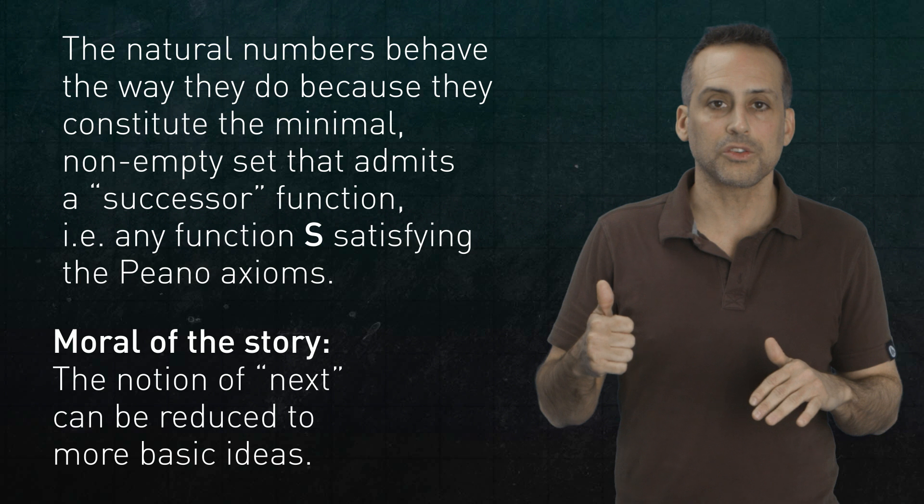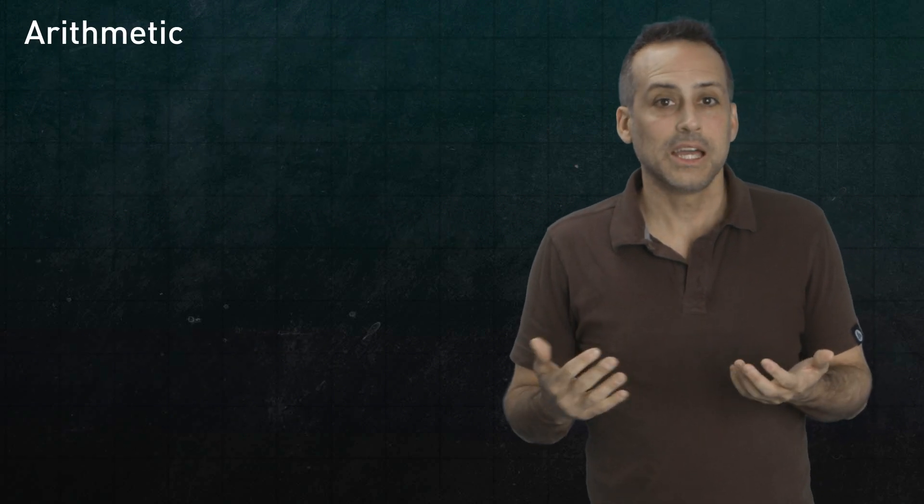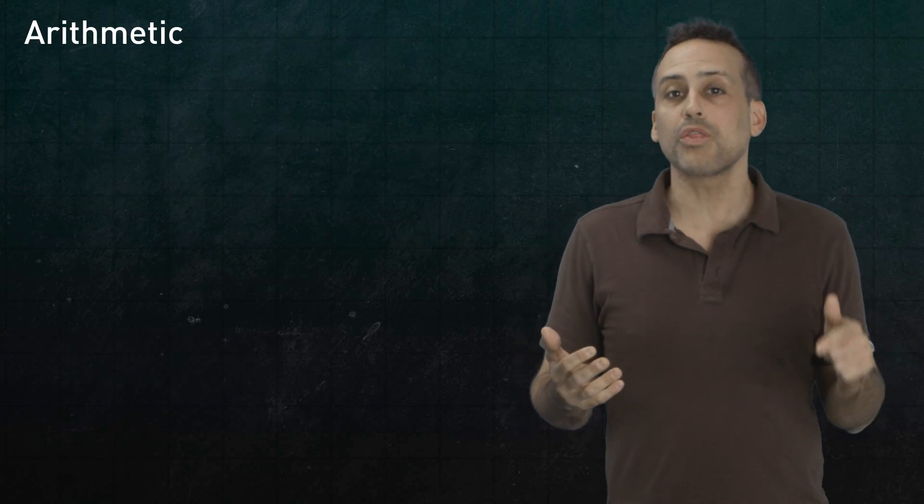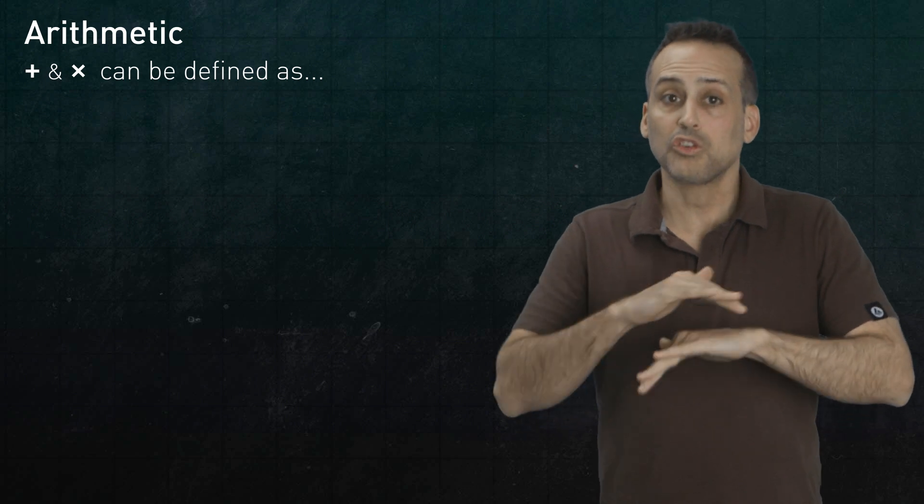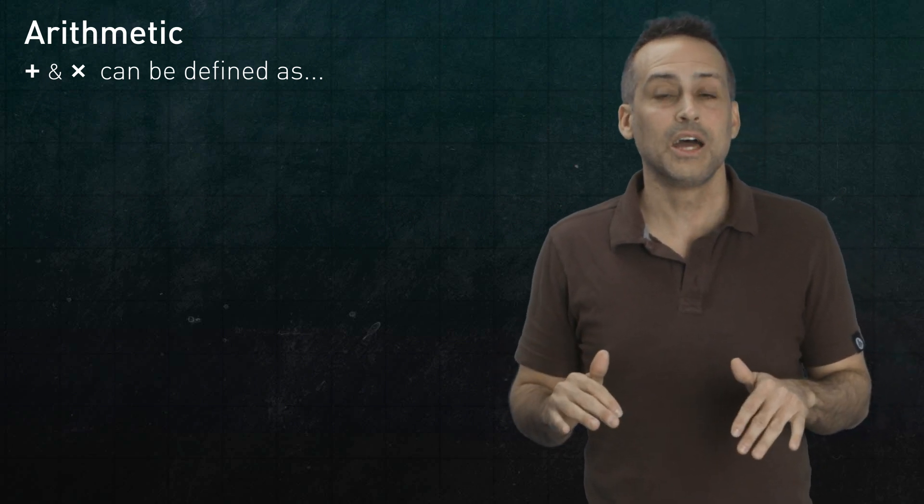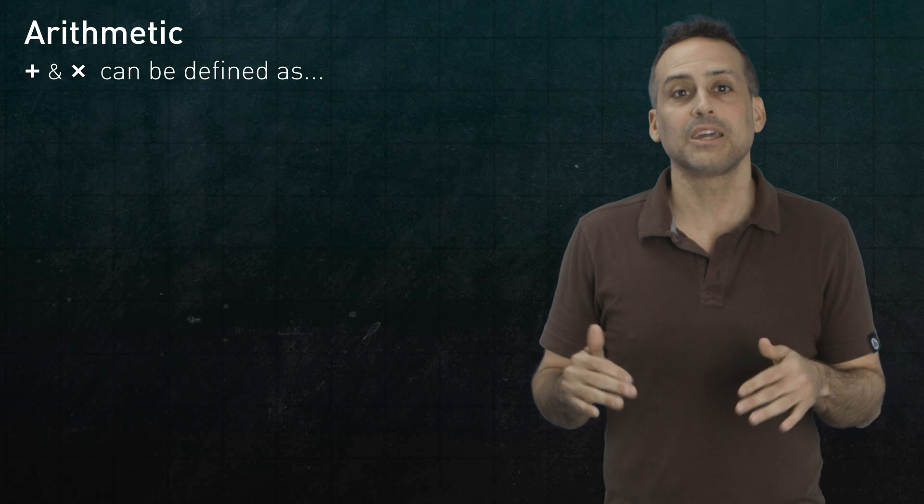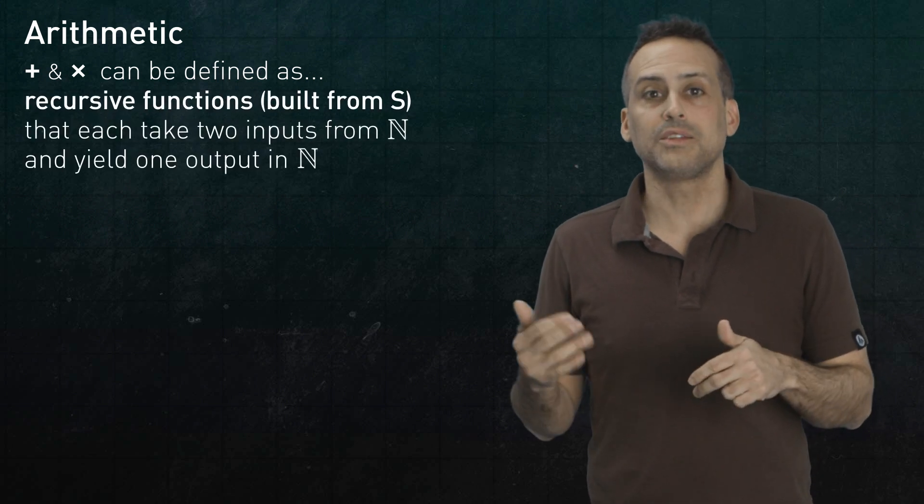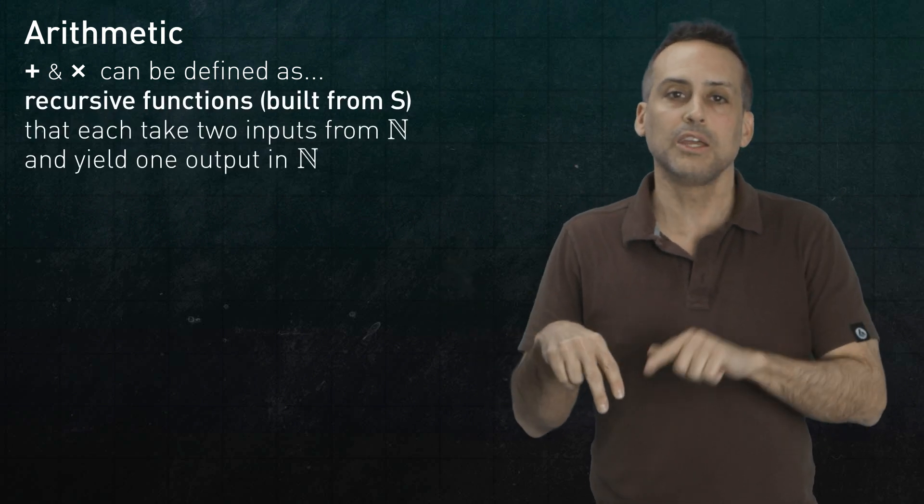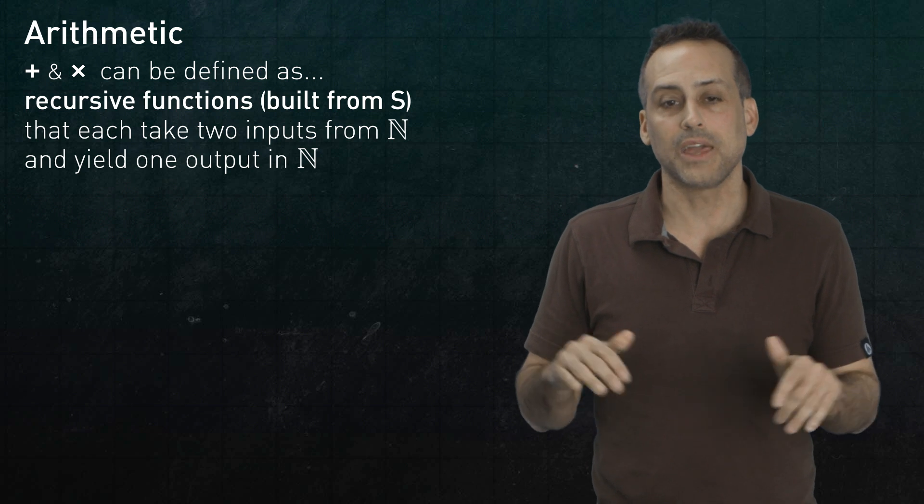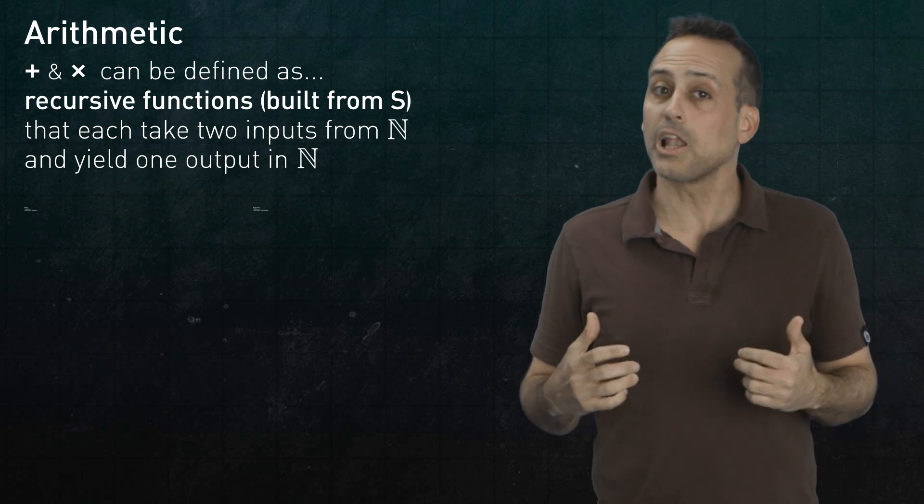Now for some loose ends. First, what about arithmetic? It turns out that you can define both addition and multiplication solely in terms of the successor function s. Each of those operations, in fact, can be viewed as a function that takes two inputs from n and yields one output in n. And they can be defined recursively by the following rules.